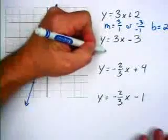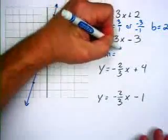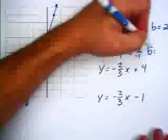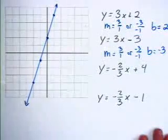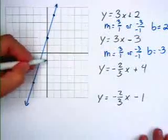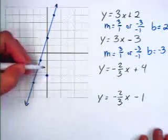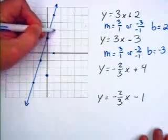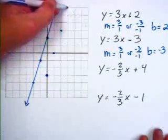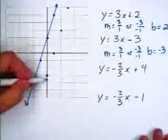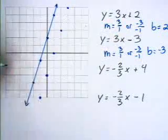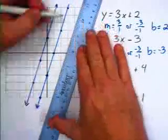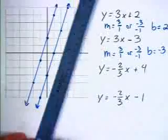Now we're going to graph the one below it. Its slope is also 3 over 1, or negative 3 over negative 1. Its y-intercept is negative 3. So we start with the y-intercept at negative 3, and the slope is up 3 to the right one, or down 3 to the left one. And those lines are parallel.